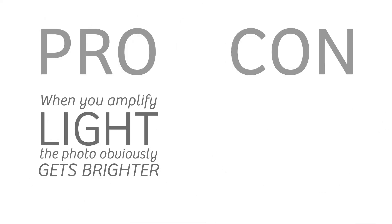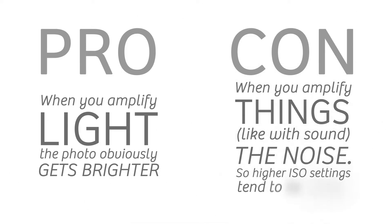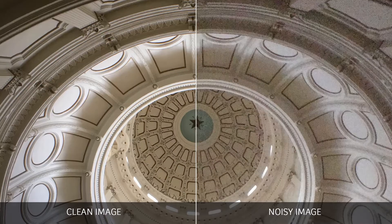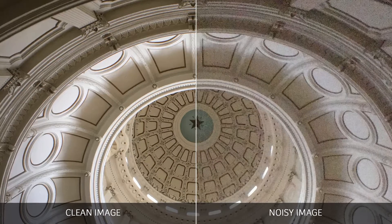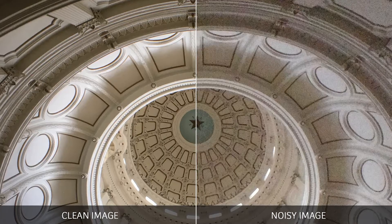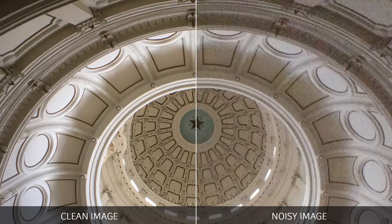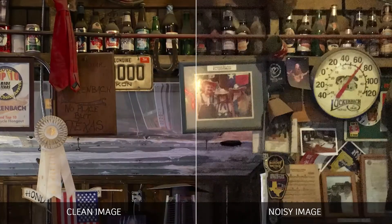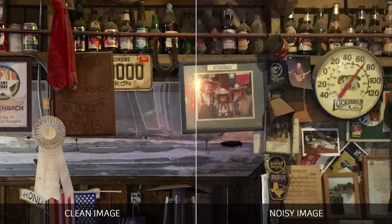Pro: when you amplify light, the photo obviously gets brighter. Con: when you amplify things, like you do with sound for example, you're also amplifying the noise. So higher ISO settings tend to be noisier photographs. In less than ideal lighting situations, you often face trade-offs.